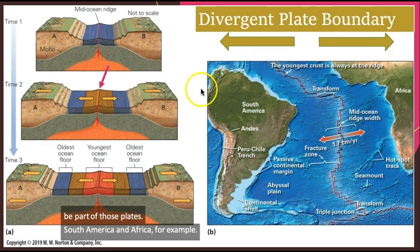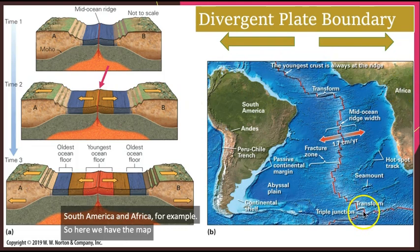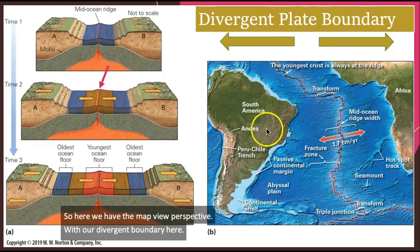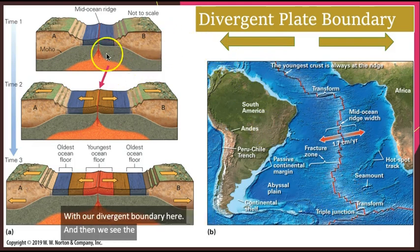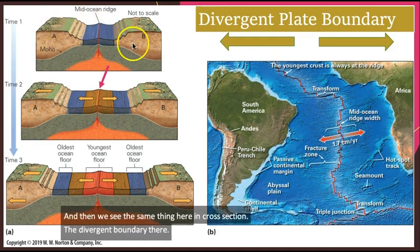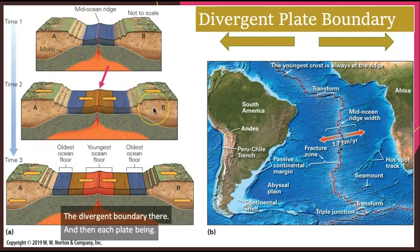So here we have the map view perspective with our divergent boundary here. And then we see the same thing here in cross section, the divergent boundary there, and then each plate being pushed in opposite directions.